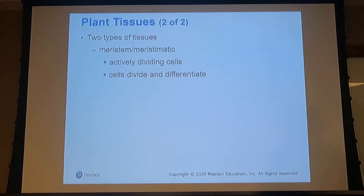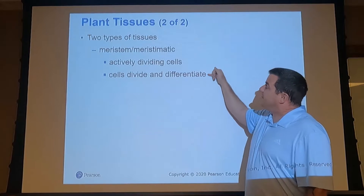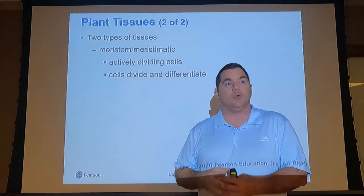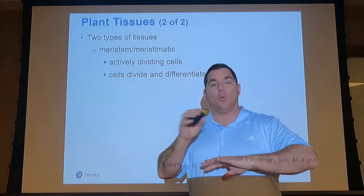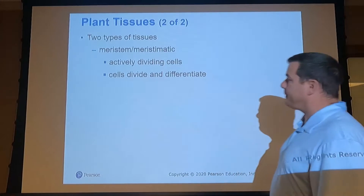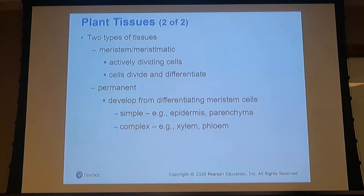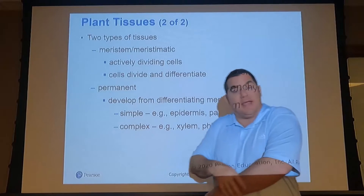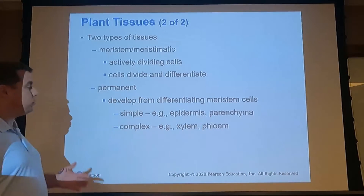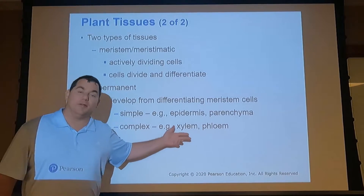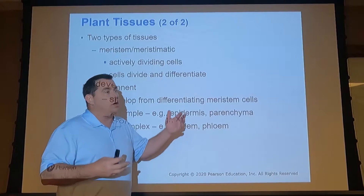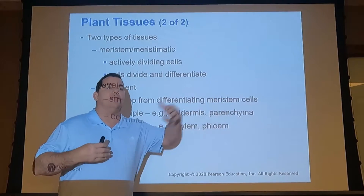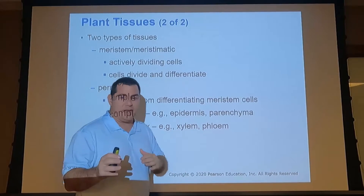There are two types of tissues. The first is meristematic tissue, which is important for cell differentiation — determining whether a cell becomes a root cell, a flower cell, or a leaf cell. The second type is permanent tissues, which arise from the differentiating meristematic cells. Examples include the epidermis, and more complex tissues like the xylem and phloem. Once permanent tissues are formed — like xylem — they do not change; that is their job and it's done.